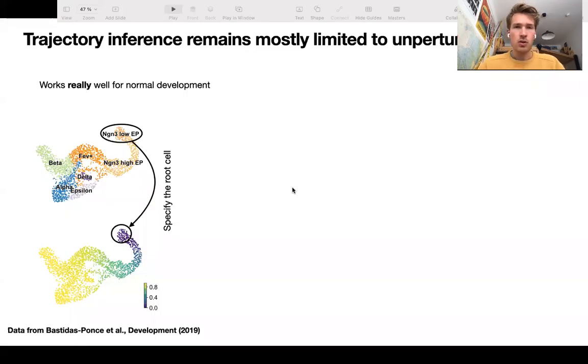The starting point for this talk is the classical concept of trajectory inference, where you use the asynchrony in biological processes to piece together continuous trends based on static snapshots as you get them in a single-cell RNA sequencing experiment.